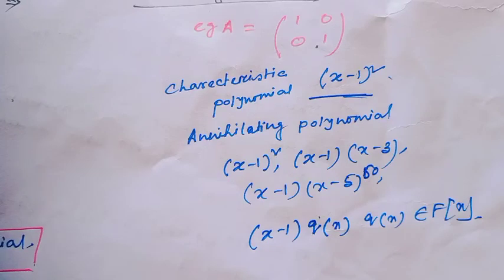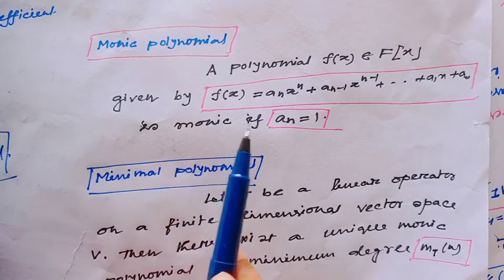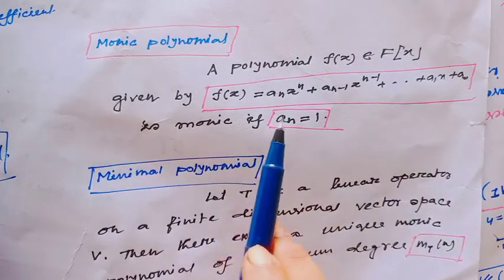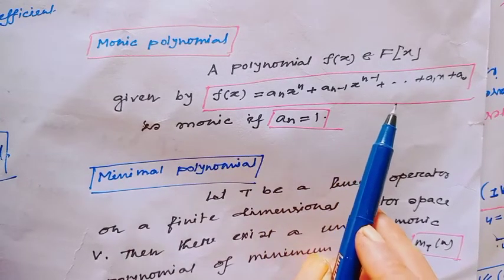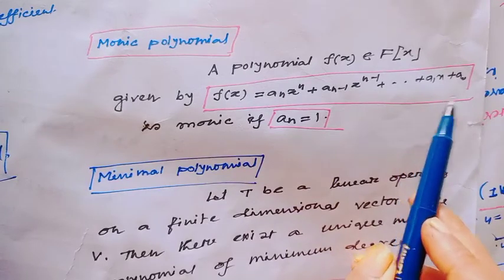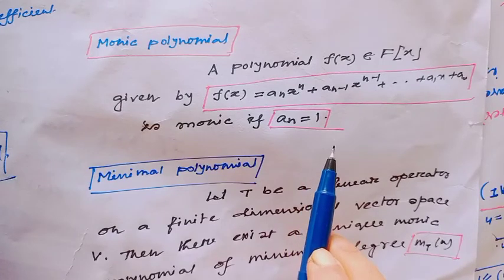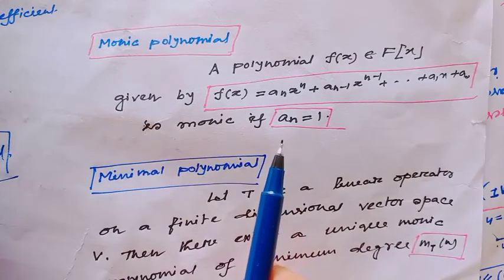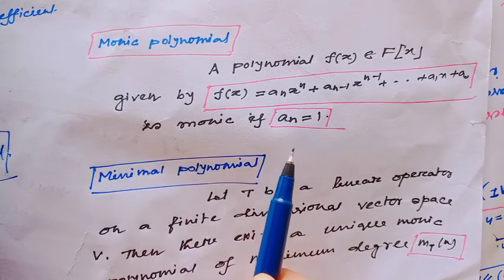Now I will see what is a monic polynomial. A polynomial f(x) = aₙxⁿ + aₙ₋₁xⁿ⁻¹ + ⋯ + a₁x + a₀ is monic when aₙ = 1, that is, when the coefficient of the highest power of x equals 1. Such a polynomial is called a monic polynomial.